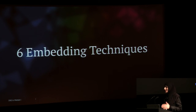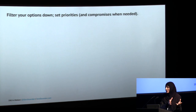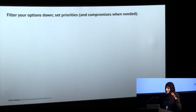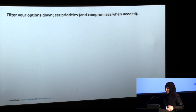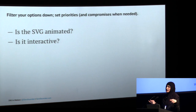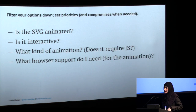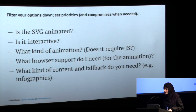Which embedding technique should you choose? Because SVG is both an image format and a document format, and because some embedding techniques accept scripts while others don't, you have to filter your options and set priorities. Ask yourself: is the SVG animated? Is it interactive — if it's interactive, you can't use SVG as an image. What kind of animation does it require? Does it require JavaScript? What browser support do you need, and what kind of fallback content is required?